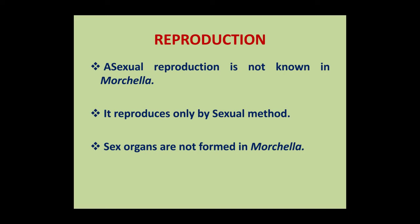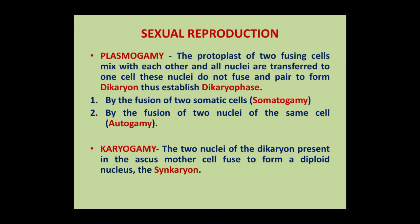Sex organs are not formed in Morcella. It reproduces by the process of plasmogamy and karyogamy. Sexual reproduction occurs by the following steps: the first step is plasmogamy, meaning the fusion of the protoplast of two cells, and then karyogamy, meaning the two nuclei fuse.